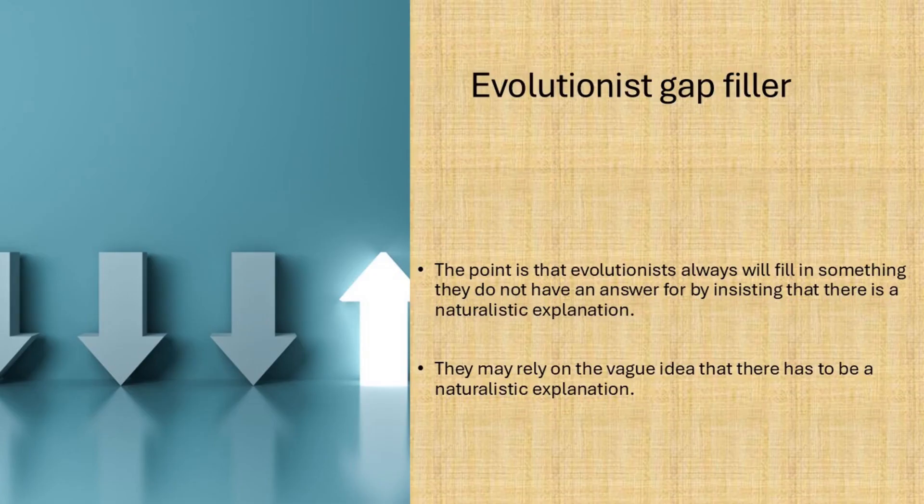The point is that evolutionists always fill in something they do not have an answer for by insisting that there is a naturalistic explanation. They may rely on the vague idea that there has to be a naturalistic explanation.